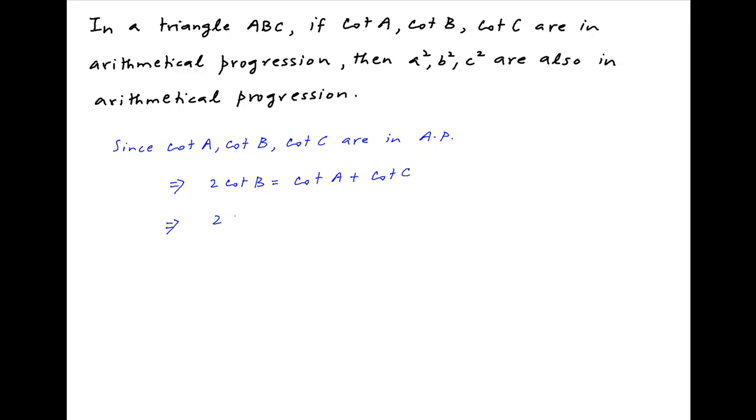This can be written as 2 cos B upon sin B on the left hand side is equal to cos A upon sin A plus cos C upon sin C on the right hand side.